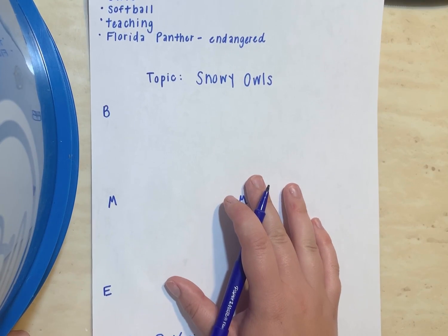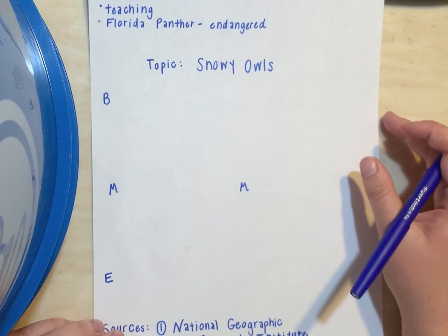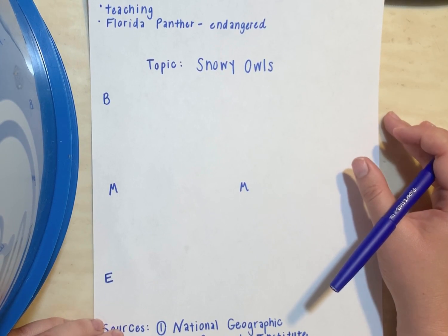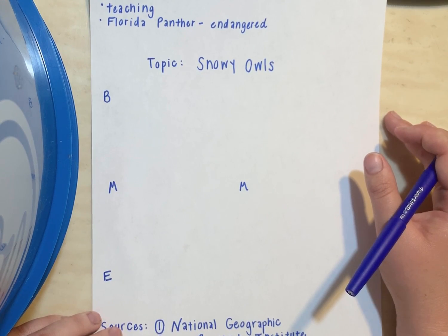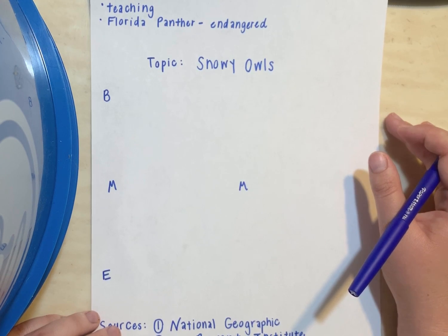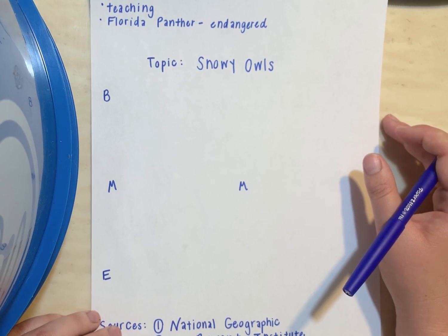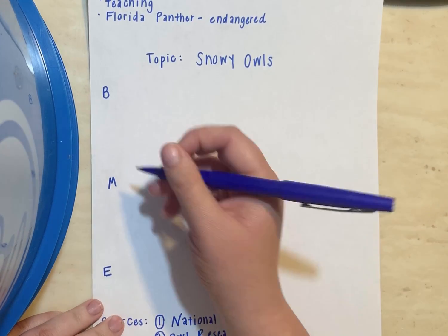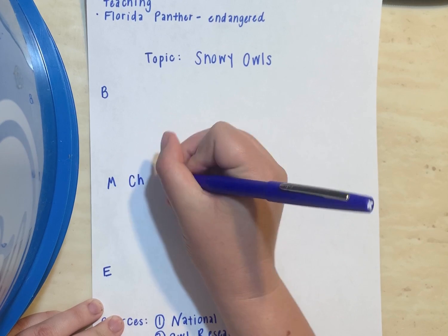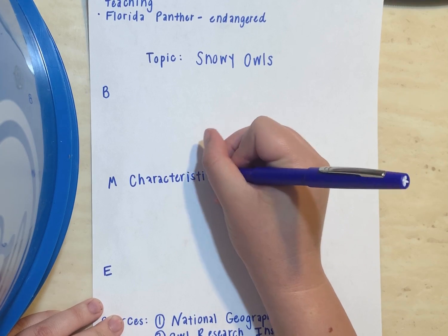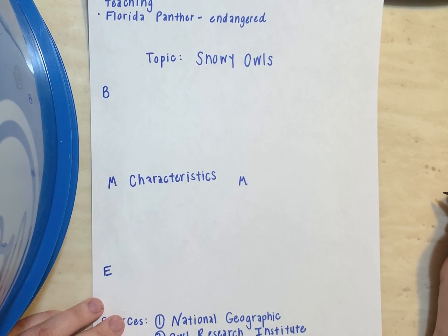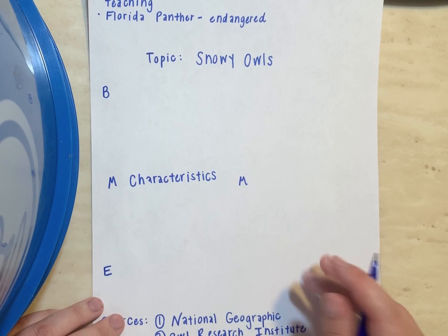Now boys and girls, remember from class, the hardest part of our plan is coming up with our two middles — our two main ideas. I need to think of two main ideas that I'm going to talk about when it comes to snowy owls. My middle one is going to be all about the characteristics of snowy owls — what they look like, how much they weigh, how tall they are, what color they are.